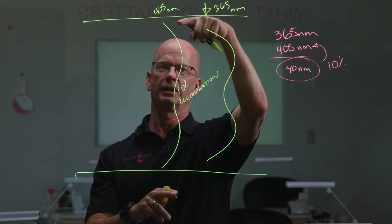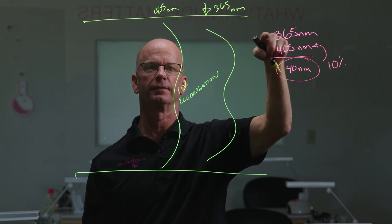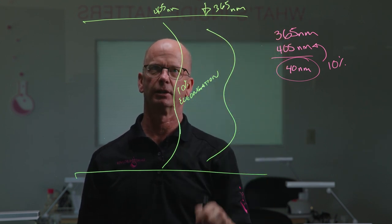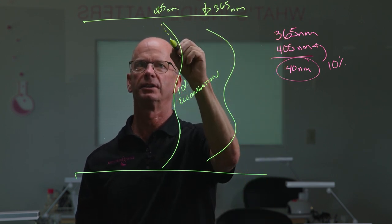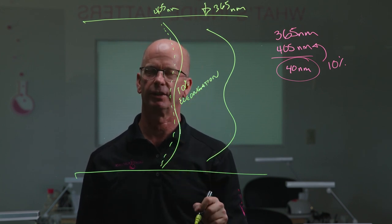So because it's been elongated by 10%, because it's 405 nanometers as opposed to 365 nanometers, that additional elongation increases the ability of that photon to penetrate into the gel and giving us a slightly thicker cure.